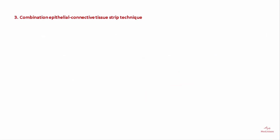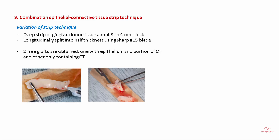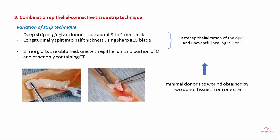The combination epithelial connective tissue strip technique is a variation of the strip technique where a deep strip of gingival donor tissue about 3 to 4 mm thick is harvested, then split longitudinally into half thickness using a number 15 blade. This yields two grafts: one with epithelium and a portion of connective tissue, and the other with only connective tissue. This results in minimal donor site wound, and allows faster epithelialization with uneventful healing within one to two weeks.